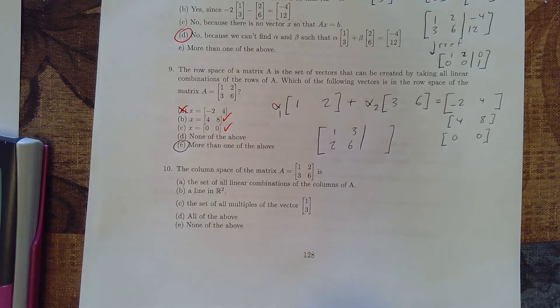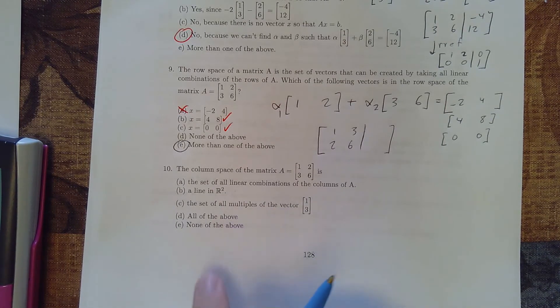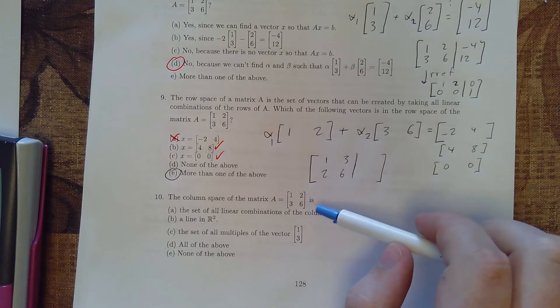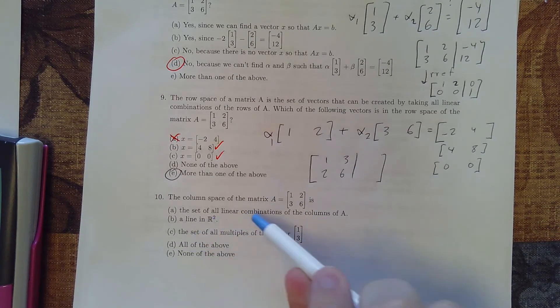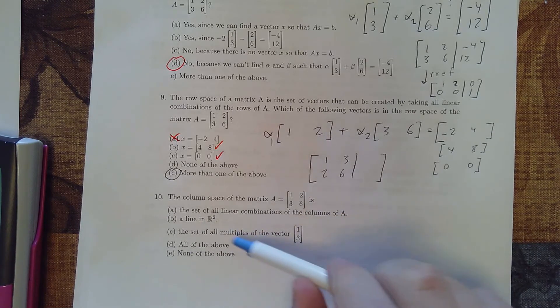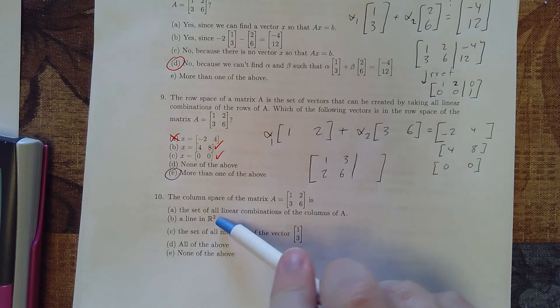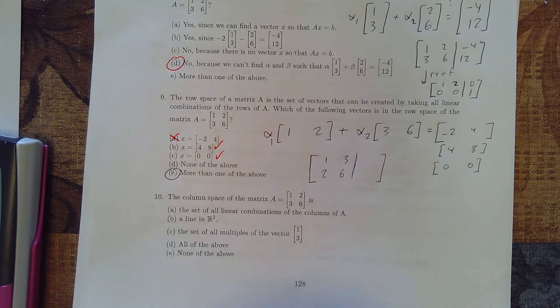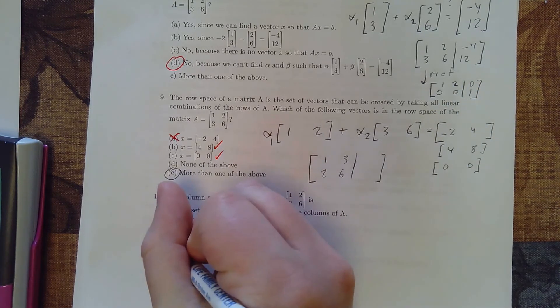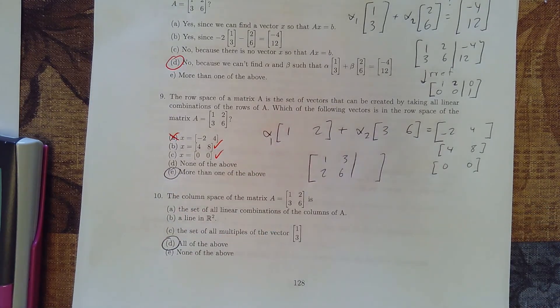All right. Last but not least, we want to know which of these counts as the column space of this matrix. So we have multiple options here. We have the set of all linear combinations of the columns of A. Well, that is true. These next two, so a line in R2, well, it would need to be a line is only something that goes with one dimension. So we need to make sure that this is one dimension. And the last is set of all multiples of the vector 1, 3. Well, what we found is that we end up getting an infinite number of solutions. And so actually all of the above end up being true.